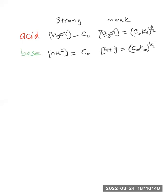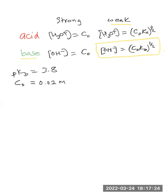Now let's consider the situation where you are given the pKb of a base equal to 3.8, and the initial concentration equal to 0.02 molar. In that case, we know we are given a base — more specifically a weak base — therefore we need to use the weak base relationship: OH⁻ concentration equals the square root of c₀ times Kb.